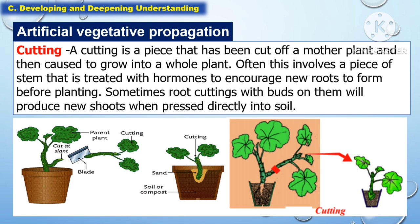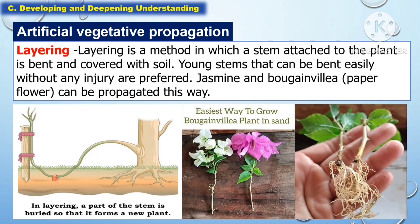Another type of artificial vegetative propagation is cutting — a piece cut from a mother plant and caused to grow into a whole new plant. This often involves a piece of stem treated with hormones to encourage new roots to form before planting. Sometimes, root cuttings with buds will produce new shoots when pressed directly into the soil. Another type is layering, a method in which a stem attached to the plant is bent and covered with soil. Young stems that bend easily without injury are preferred. Examples include jasmine and bougainvillea.